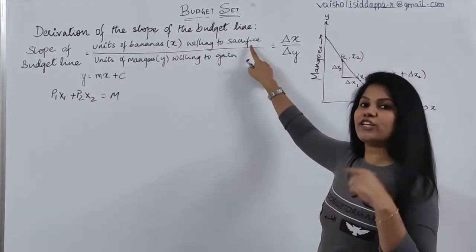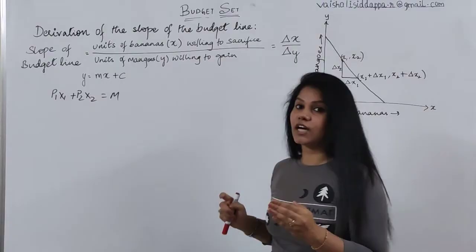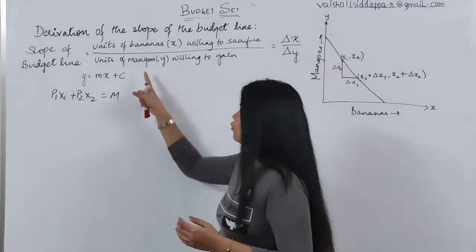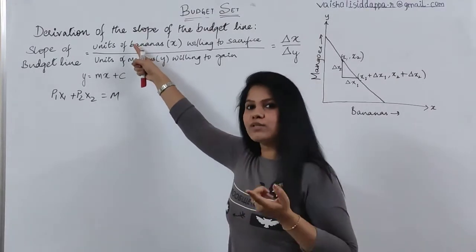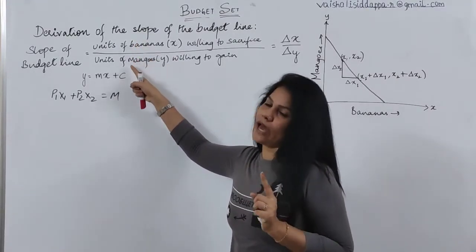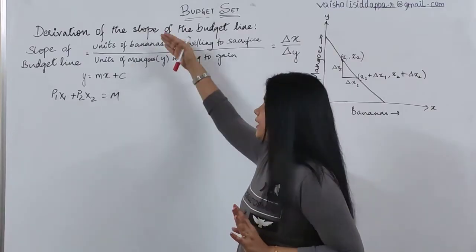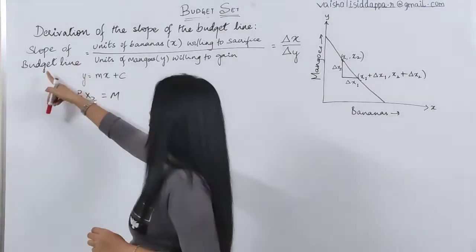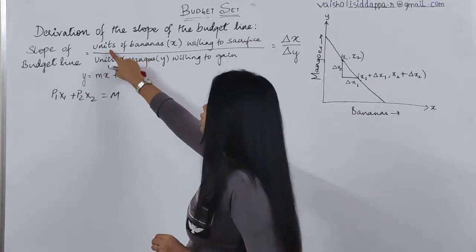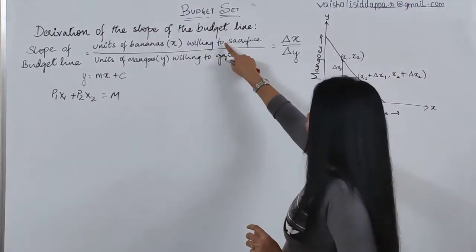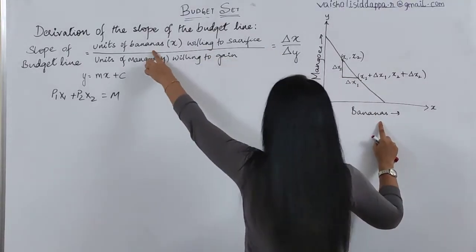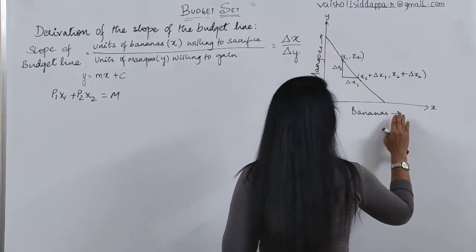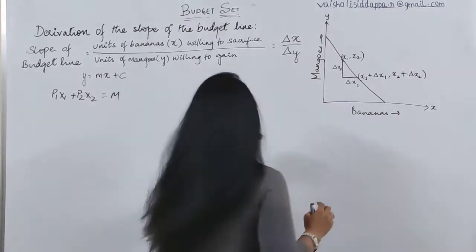Your income is very much limited. So if you want to buy more of mango, you have to sacrifice banana. If you want more of bananas, you have to sacrifice mango. That is what we are trying to express with the help of a formula now — the slope of the budget line in terms of units of banana you are willing to sacrifice.